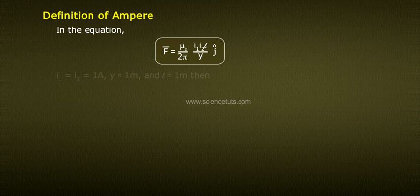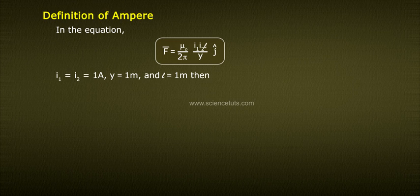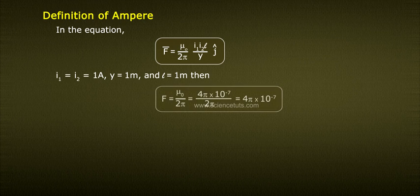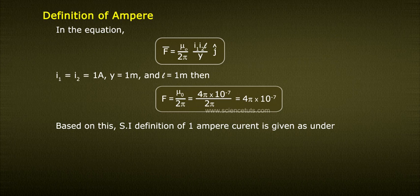If I1 equals to I2 equals to 1 A, y equals to 1 meter, and l equals to 1 meter, then F bar equals to mu naught by 2 pi equals to 4 pi into 10 power minus 7 by 2 pi equals to 2 into 10 power minus 7.